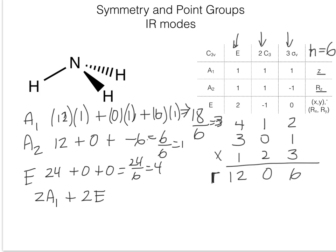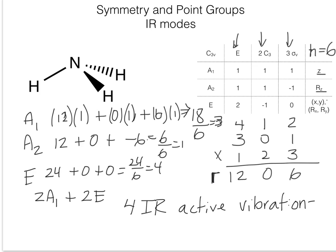So if we look at an infrared spectrum of ammonia, we expect a total of four bands: two of them having totally symmetric representations of A1 and two of them having the symmetry of the representation E. That is how to do the symmetry point group analysis for ammonia.